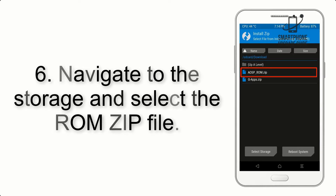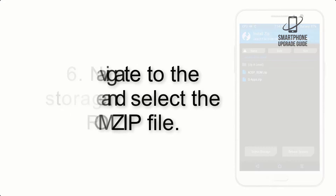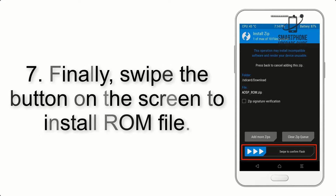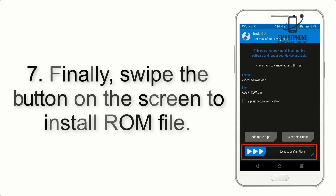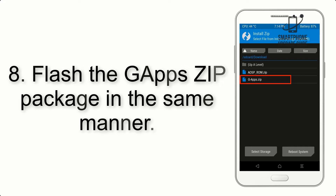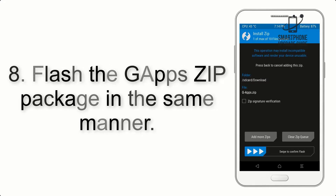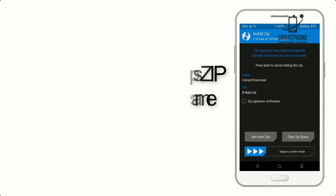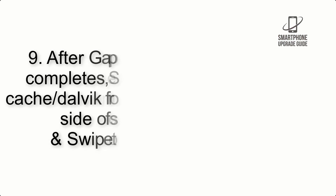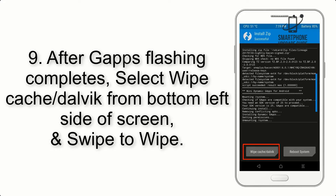Step 6: Navigate to the storage and select the ROM zip file. Step 7: Swipe the button on the screen to install the ROM file. Step 8: Flash the GApps zip package in the same manner.